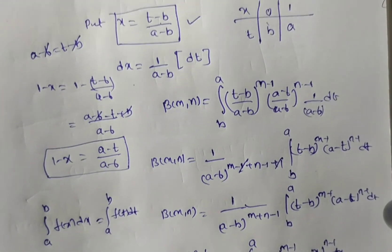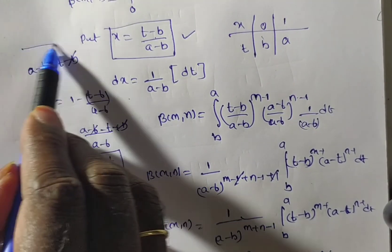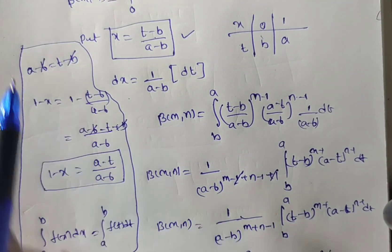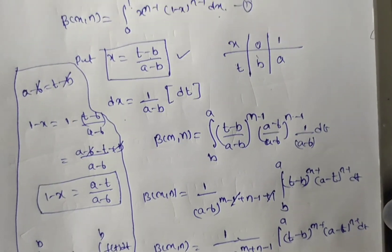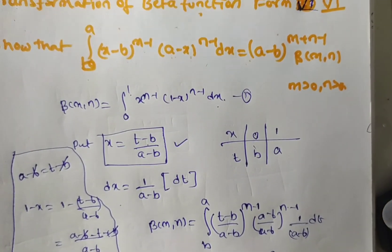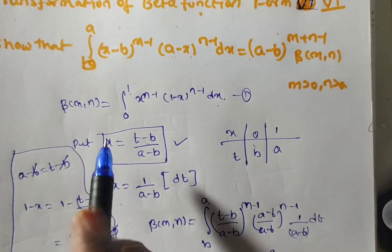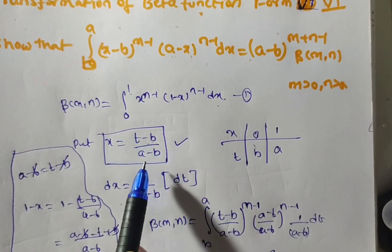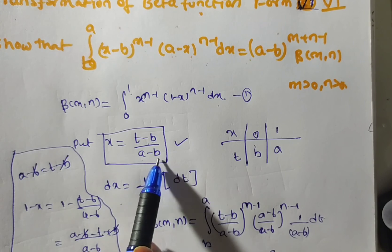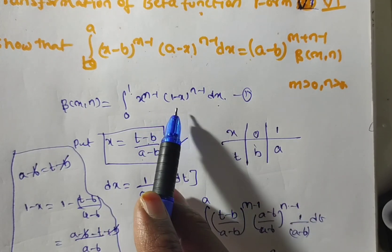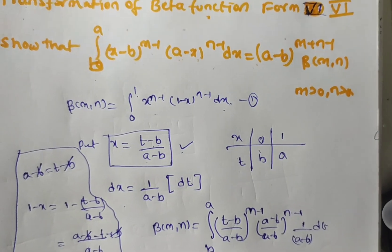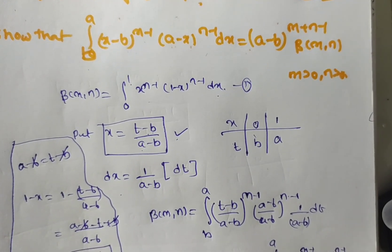Is it clear for everyone? So what you have to substitute in this case — the hint is: remember, to get this result, we have to substitute x equal to (t minus b) by (a minus b) in the definition of beta of m comma n. Then only we can solve this problem very easily. Thank you for watching this video.